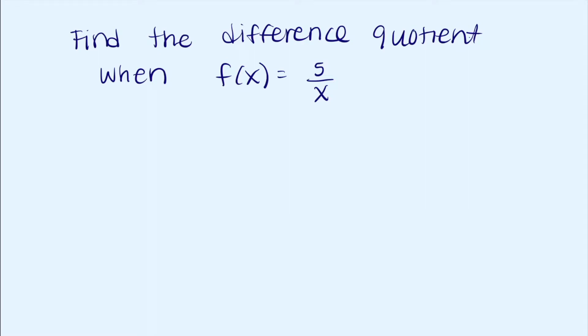Find the difference quotient when f of x equals 5 over x. The difference quotient formula is f of x plus h minus f of x, all over h.